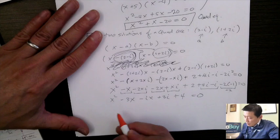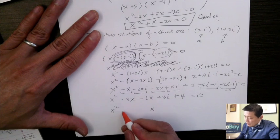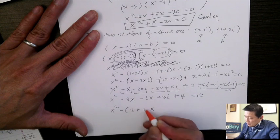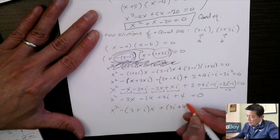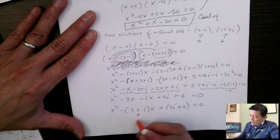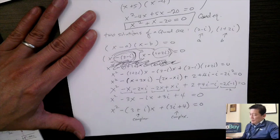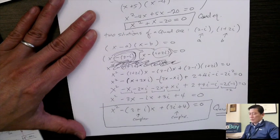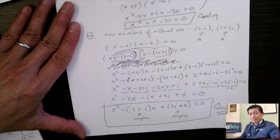The final quadratic equation is x squared minus (3 plus i)x plus (3i plus 4) equals zero. As you can see, there are complex number coefficients — quite complicated, but solvable. This ends today's lesson. In the next lesson, I will talk about the quadratic formula.